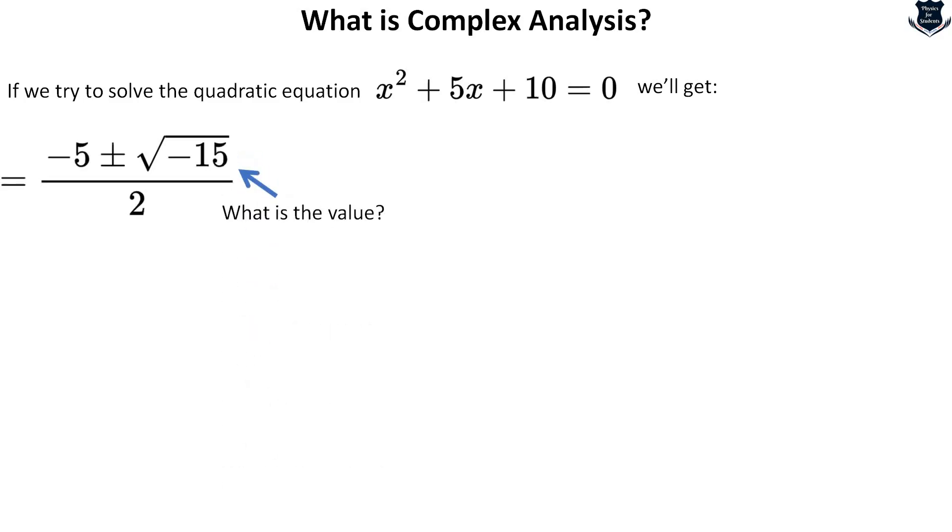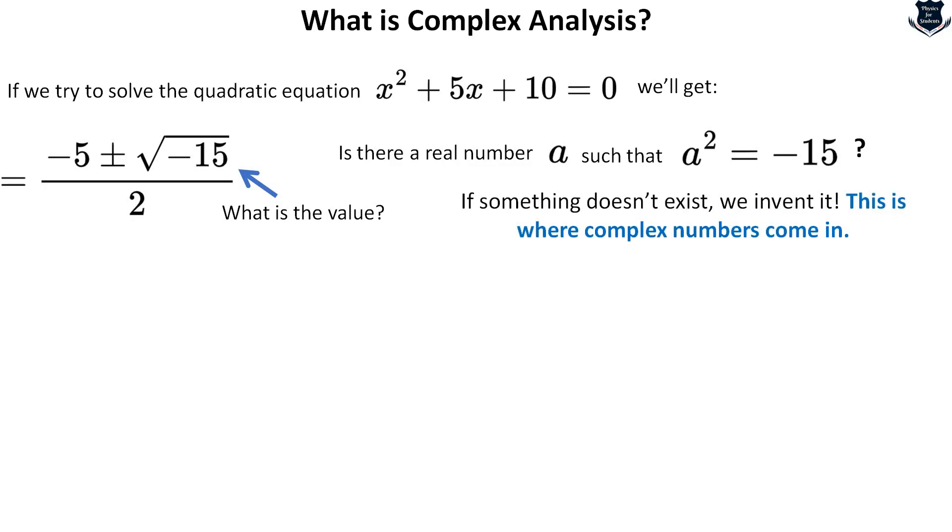Here all the trouble is being caused by square root of minus 15. Now what is this value? The question arises: is there a real value a such that a squared equals minus 15 or something like that? Physicists and mathematicians have not stopped, but they think that something does not exist. Why don't we invent that thing which does not exist?